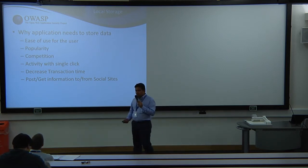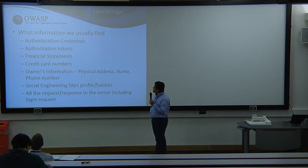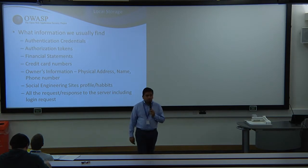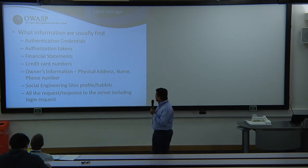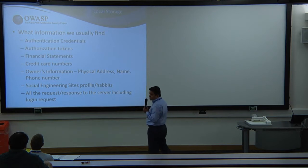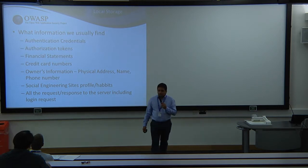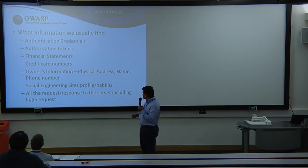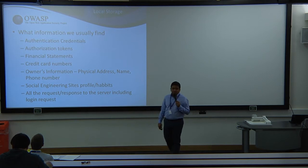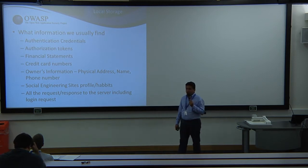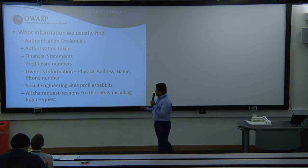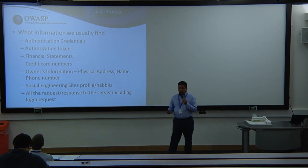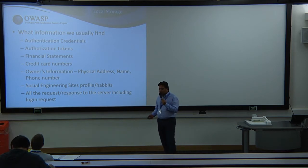What information do you usually find in local storage? Authentication credentials, authorization tokens, financial statements, credit card numbers, private information like social security numbers, social networking accounts like Facebook and Twitter, owner information — where they live, phone number, family details — and all requests and responses sent from client to server in a typical iOS application.